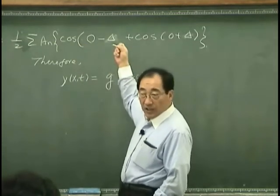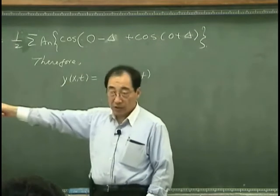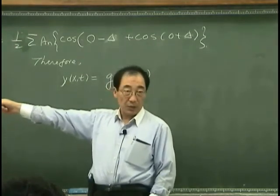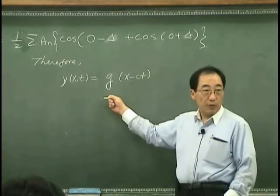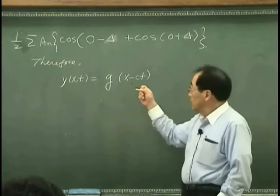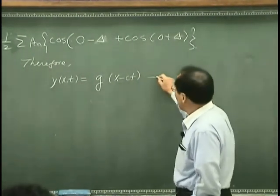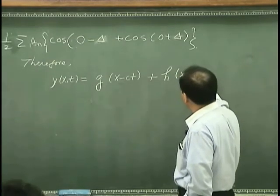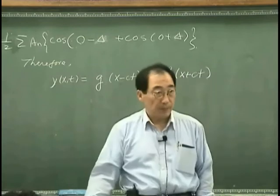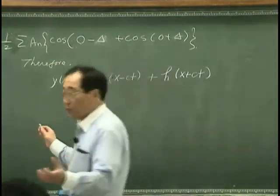So if I generalize what we learned from this, using the simplest case, then we can say the general traveling wave would be the right-going wave that has a shape G, and the left-going wave that has shape H. That's general one-dimensional wave.